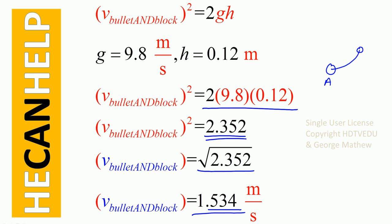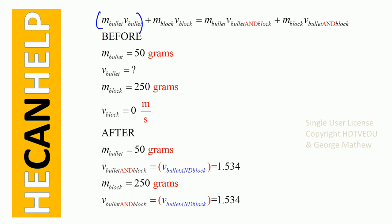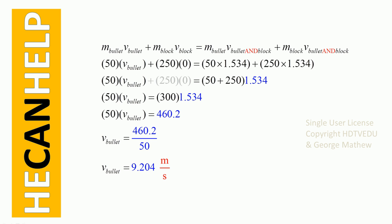We now know the speed at point A — the speed of bullet-and-block after collision — is 1.534 meters per second. Going back to the momentum equation: momentum before collision equals momentum after collision. We know the mass of the bullet is 50 grams, the mass of the block is 250 grams, the block's initial speed is zero, and the combined speed after collision is 1.534 meters per second.